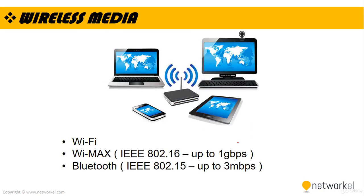Wireless communication is the transfer of information between two or more points not connected by a cable. The most common wireless technologies use radio waves. With radio waves, speeds may be as low as 3 megabits per second for Bluetooth, or as high as 1 gigabit per second for WiMAX technology.